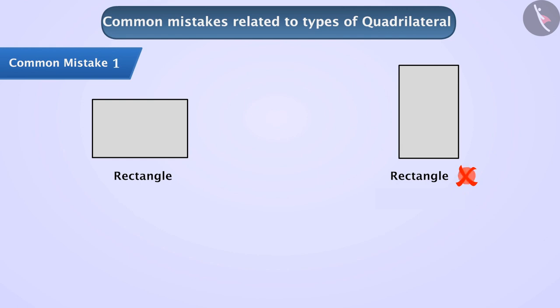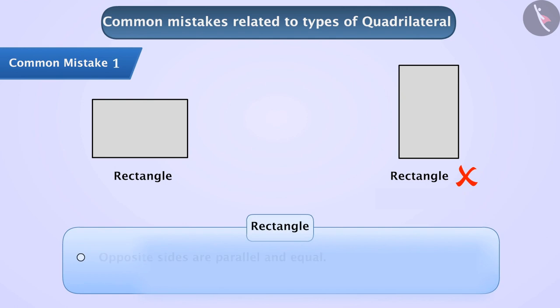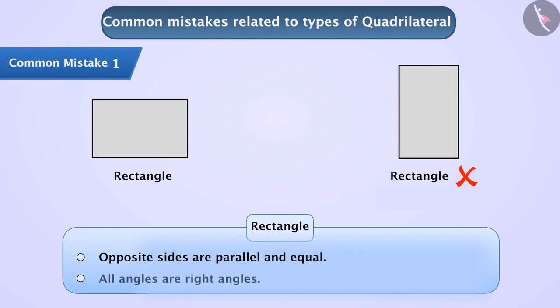A correct understanding is that opposite sides of a rectangle are parallel and equal, and all angles are right angles. With this understanding, we can make different rectangles in different ways. Here we can see that the given properties are satisfied, and therefore this is a rectangle.